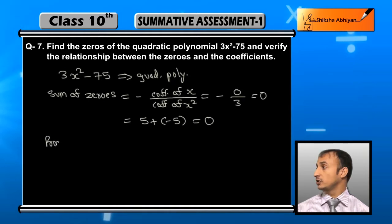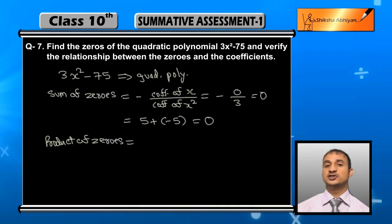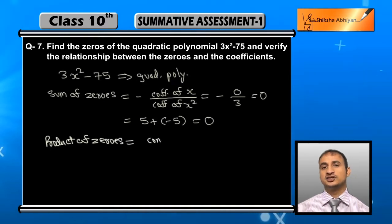Now the product of the zeros equals constant term upon coefficient of x². Here the constant term is minus 75 and the coefficient of x² is 3.